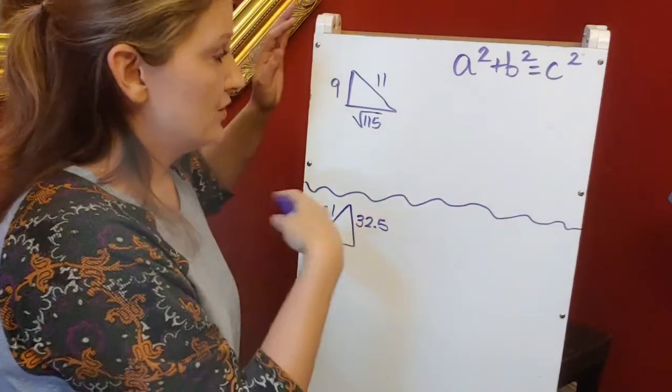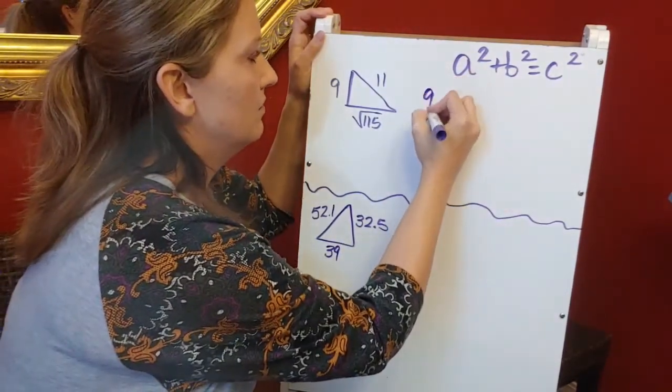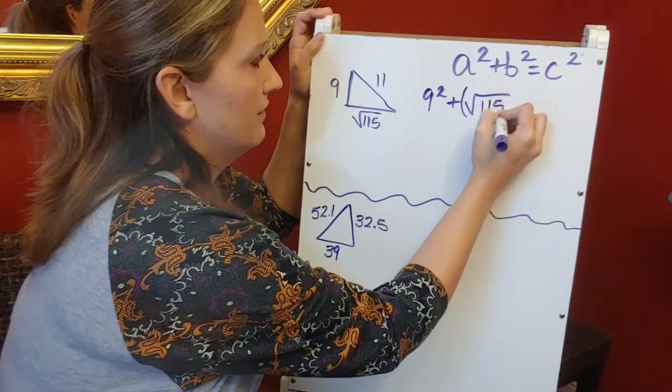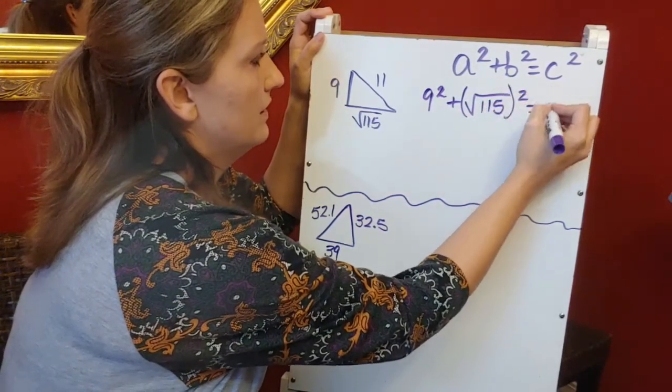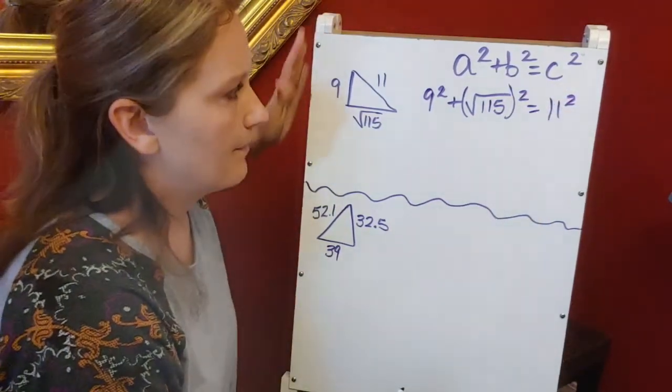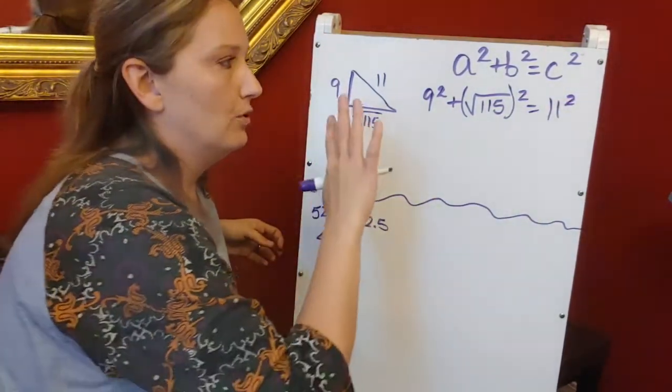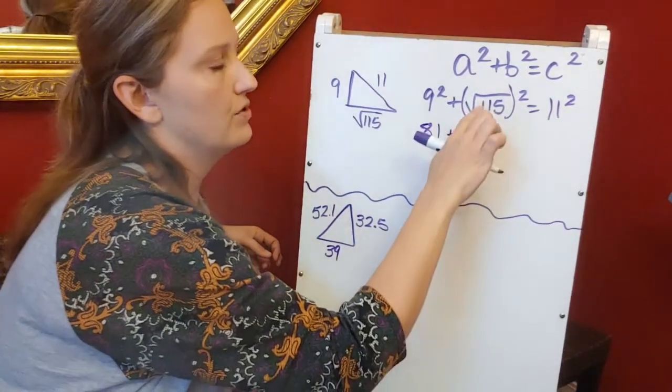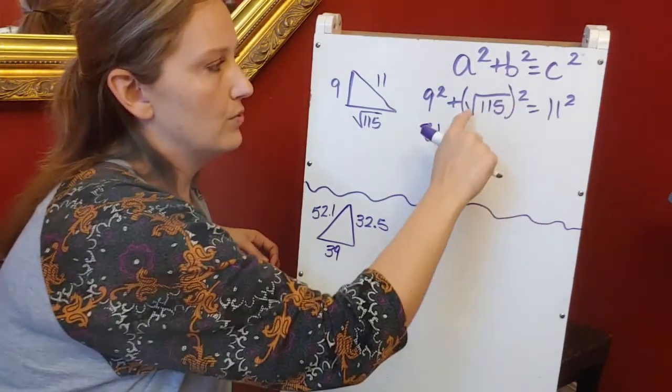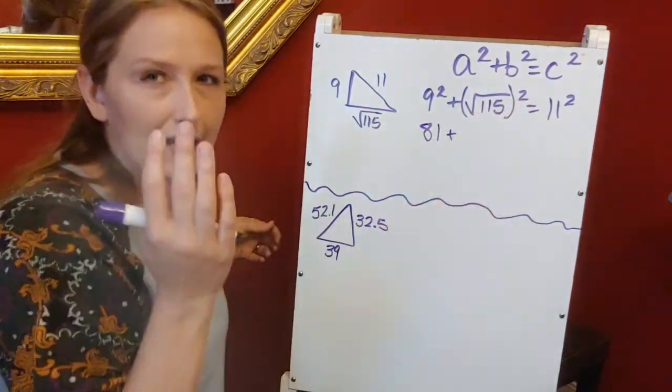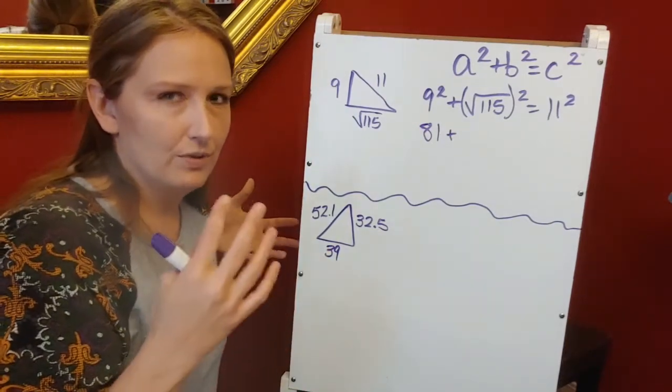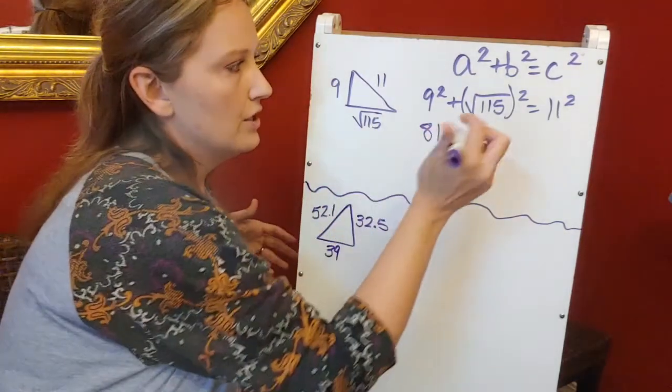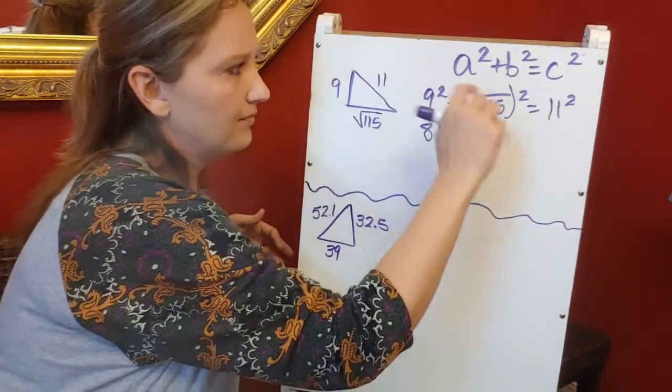It's my longest side, so I plug this into Pythagorean theorem: 9² + (√115)² = 11². I'm going to solve this equation. 9² is 81. The square root of 115 squared—square roots and squares cancel each other out. If you take the square root of a number, it cancels out any square.